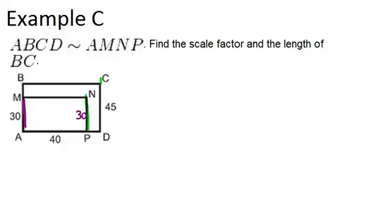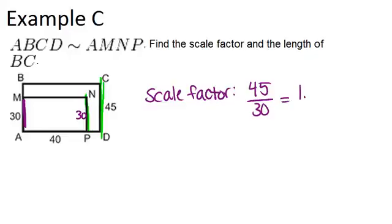NP is a side that corresponds with CD, which is 45. So that means the ratio between the two shapes is 30 over 45, or 45 over 30. And that will help us to get the scale factor. So the scale factor will be 45 over 30, which reduces to 1.5.